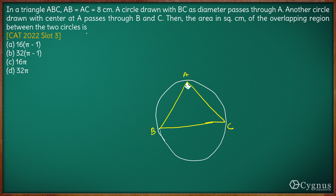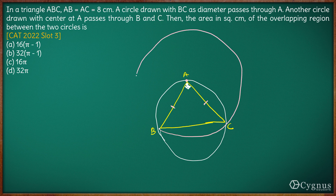Next, another circle is drawn with centre A passing through B and C. With A as the centre, if we draw with AB as the radius — since AB and AC are equal — this circle passes through B and C, meaning AB is the radius. So we have another circle with A as the centre drawn like this.